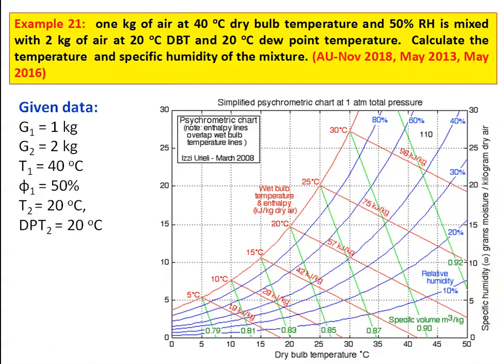1 kg of air at 40 degree dry bulb temperature and 50 percent relative humidity is mixed with 2 kg of air at 20 degree dry bulb temperature and 20 degree dew point temperature. Calculate the temperature and specific humidity of the mixture. This is a problem on adiabatic mixing.